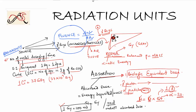The SI unit of biologic equivalent dose is Sievert, and the alternate unit is rem — which stands for Radiation Equivalent in Man. These values have been standardized for humans. 1 Sievert is equal to 100 rem.